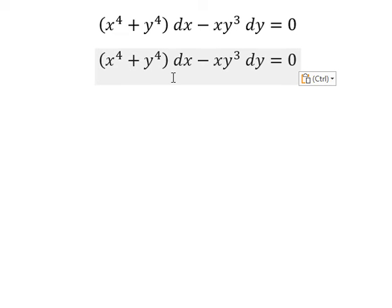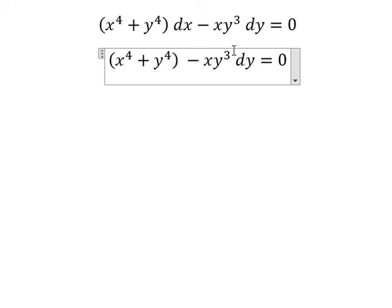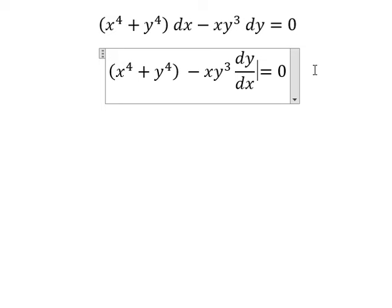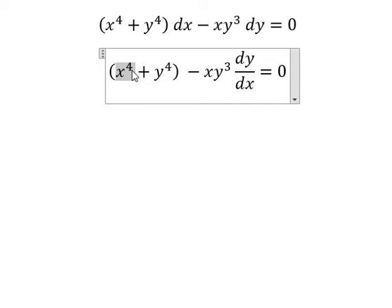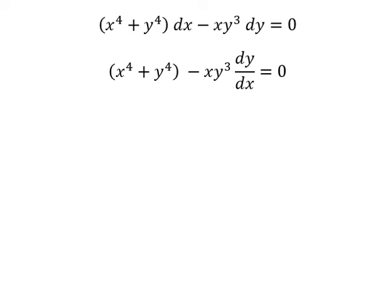We divide both sides by dx. Next we have x to the power of 4, y to the power of 4, xy to the power of 3. They are degree number 4.